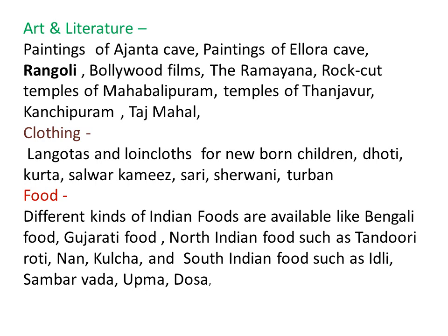Clothing: Langots and loincloths for newborn children, dhoti, kurta, salwar kameez, saree, sherwani, and turban — these are the traditional ways of dressing. Then the food: different kinds of Indian foods are available, like Bengali food and Gujarati food. North Indian foods include Tandoori roti and Naan. South Indian foods include Idli, Sambar, Vada, Upma, and Dosa, and there are many more.